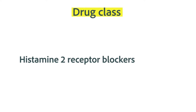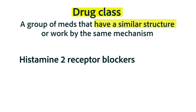We're discussing a number of topics in this chapter that are relevant to the medications known as the histamine 2 receptor blockers. The term 'histamine receptor blocker' is the term we use for the entire group of drugs, or in other words, the drug class. The drug class is a set of medications that have a similar chemical structure and/or they work by the same mechanism of action.